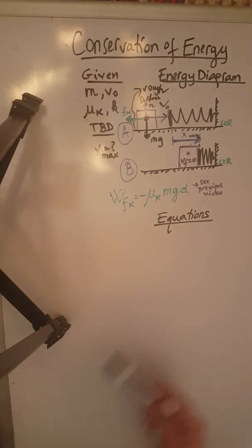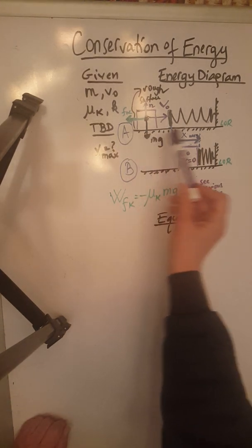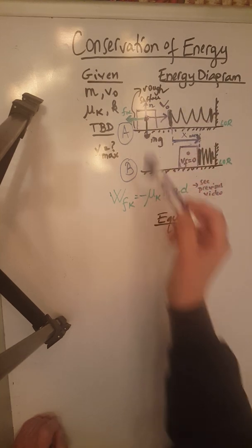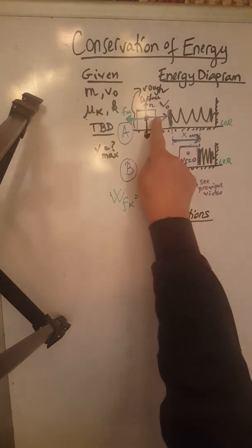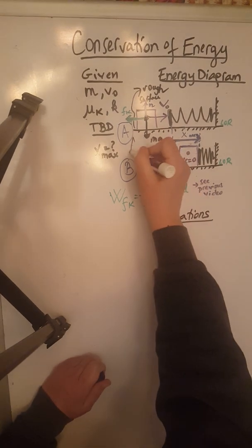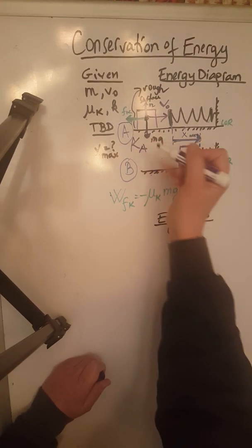So now we are going to go ahead and look at the two parts of this diagram. Part A, the object is in motion, on the level of reference, so all we have is kinetic energy. So at A we have kinetic energy.